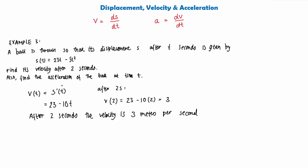We are also asked to find the acceleration of the ball at time t — not a specific value, just in terms of t. Acceleration at time t is the derivative of the velocity at time t. Our velocity is v(t) = 23 − 10t, so differentiating: the 23 vanishes and −10t becomes −10. So the acceleration at time t is −10, which is technically t to the power of zero — this is our equation for acceleration.